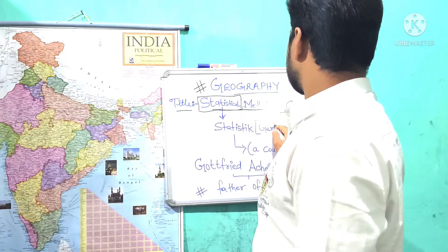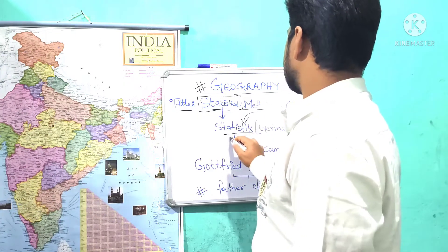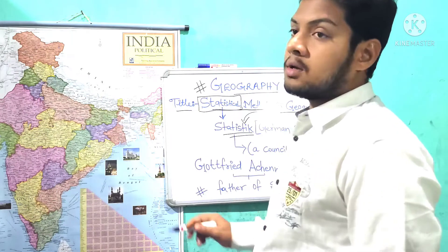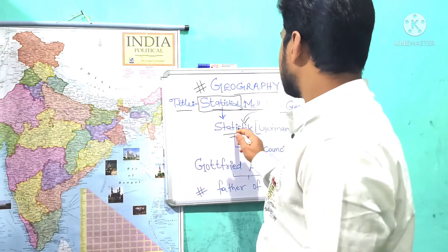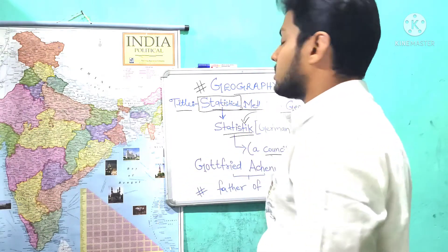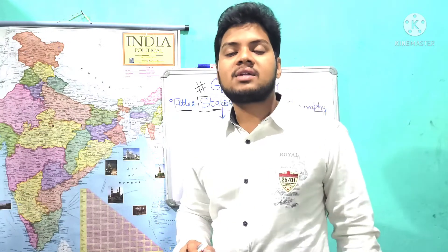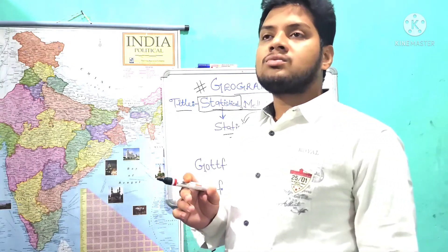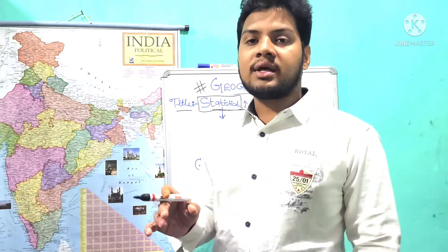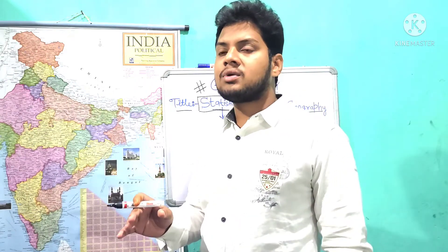This statistical word comes from the German word 'Statistik.' Statistik is a German word, and the meaning of statistic is 'a council of ministers.' In political science, we study that a council of ministers sit together and hold meetings, doing many things in those meetings.